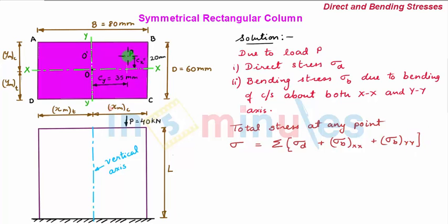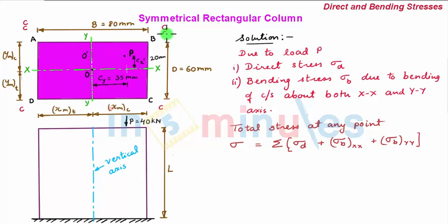Due to the compressive load P, all points will be subjected to uniform compression. Also due to load P there will be bending about xx-axis such that points A and B will be subjected to compression and points C and D will be subjected to tension. Due to bending of the cross-section about yy-axis, points B and C will be subjected to compression.